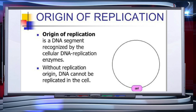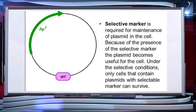Origin of replication, or ORI, is a sequence from where replication starts. Any piece of DNA when linked to this sequence can be made to replicate within the host cell. The sequence is also responsible for controlling the copy number of the linked DNA. Without ORI, DNA cannot be replicated in the cell.